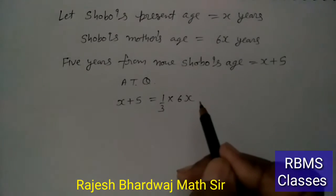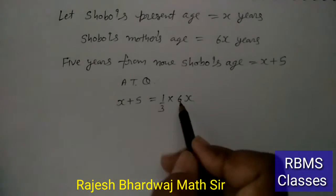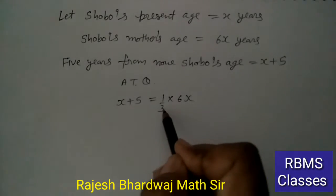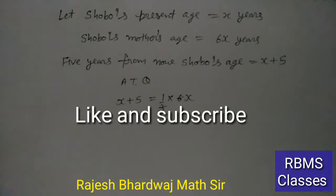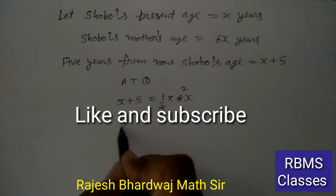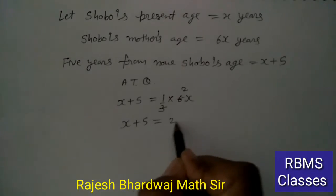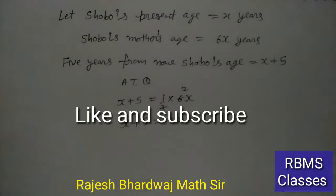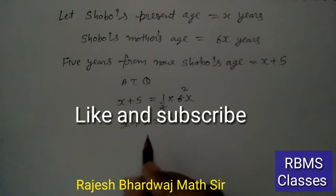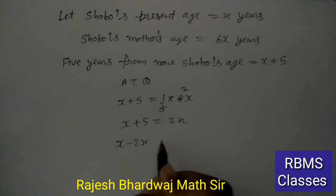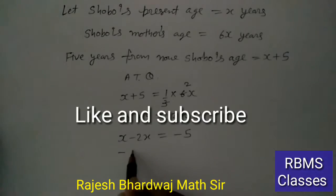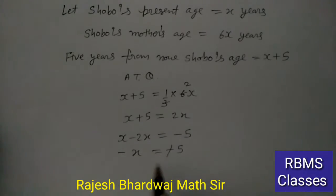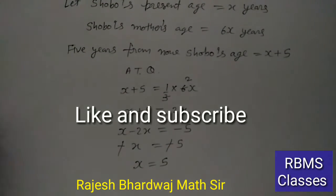तो यहां से solve करते हैं: x + 5 = 2x। 2x को इधर लेते हैं: x − 2x = −5, यानी −x = −5। Minus से minus cancel होगा तो x = 5। ठीक है बच्चों?